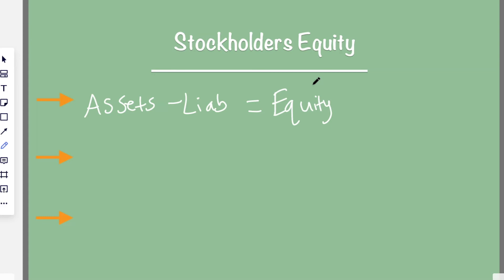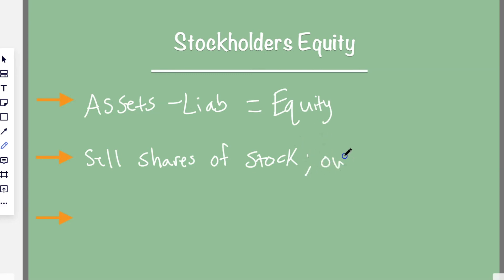So that's the general definition of stockholders' equity, and it's calculated as assets minus liabilities equals equity. You can sell shares of stock to the public — think about a share of stock as a piece of ownership. There's a lot of stuff involved with equity, and this is usually the most confusing topic for a lot of students. Hopefully in this video I can clear that up, talk about how we calculate it, and then do a practice problem.